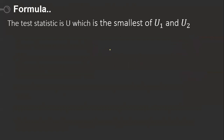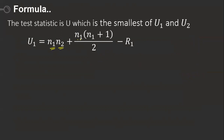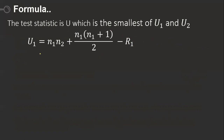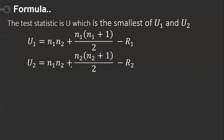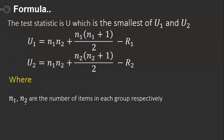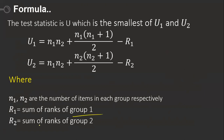The formula for U1 is: n1·n2 + n1·(n1+1)/2 − R1, where R1 is the sum of ranks of group one. Similarly, the formula for U2 is: n1·n2 + n2·(n2+1)/2 − R2. Here n1 and n2 are the number of items in each group — for example, if each group has five members, then n1 = 5 and n2 = 5. R2 is the sum of ranks of group two.